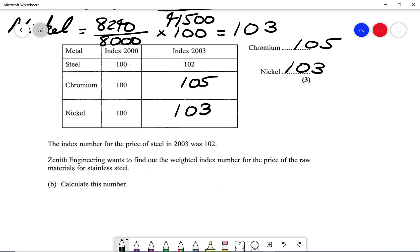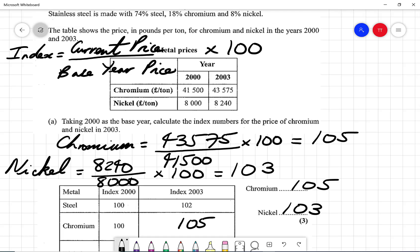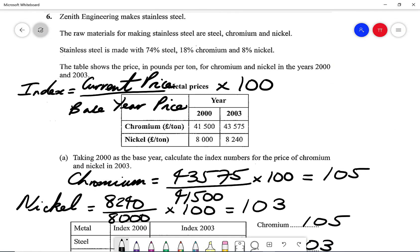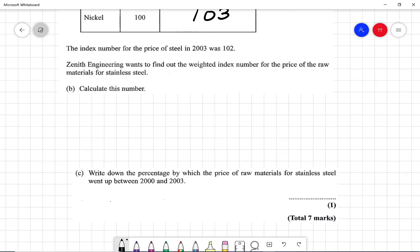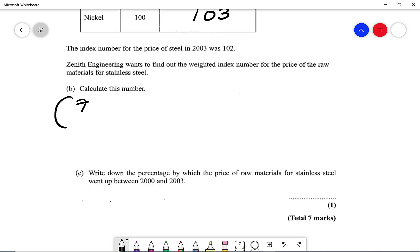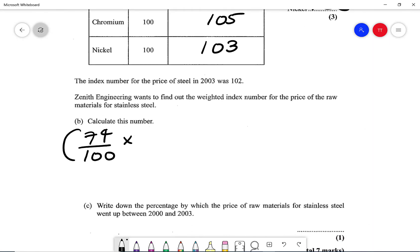So what we do is something called the weighted index number. Because we've got our percentages here, they've told us in the beginning of the question that 74% is steel, 18% is chromium and 8% is nickel. So I'm going to say it's going to be 74% times by the index number of steel, which is 102, plus 18 over 100 times by the index number of chromium, which is 105, plus 8 over 100 times 103.